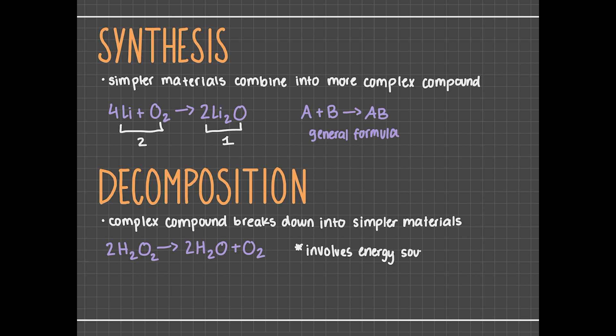So we can represent decomposition reactions by the following general formula: AB, a compound, breaks down into A and B, two simpler products.